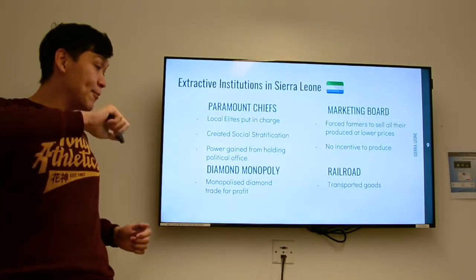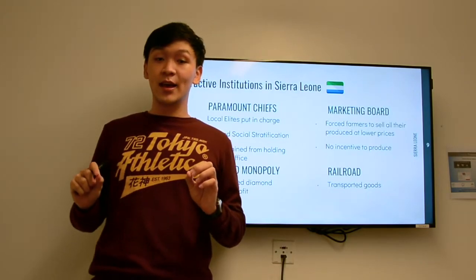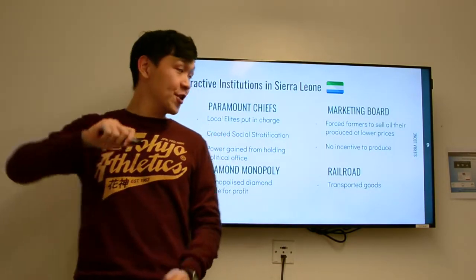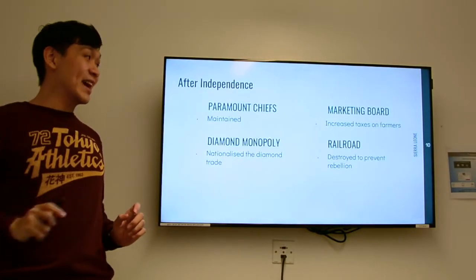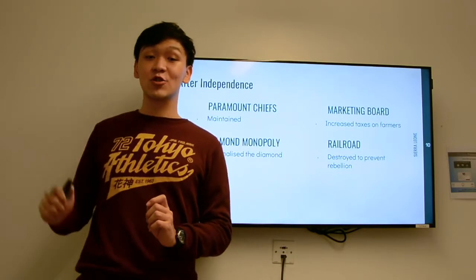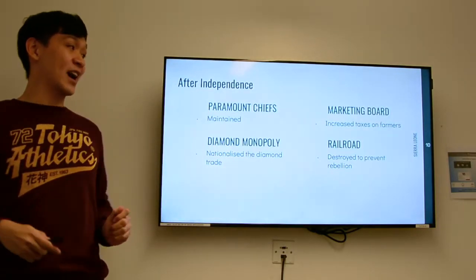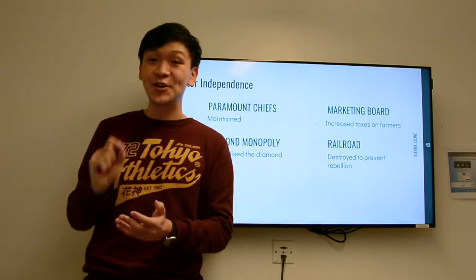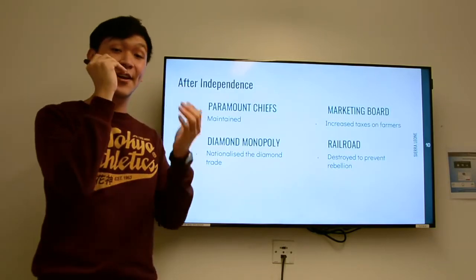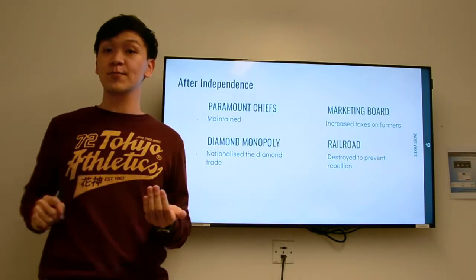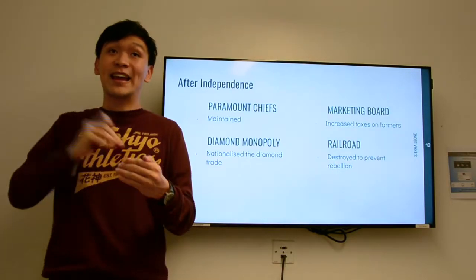In the case of the diamond monopoly, the British ensured they were the only ones able to mine diamonds in Sierra Leone and actually built a road to transfer all these goods. However, after independence, many of these institutions were maintained. The paramount chiefs continued to lead the country. The marketing board was made worse by increasing taxes on farmers. The diamond monopoly was nationalized so the Sierra Leone government became the only one who could mine diamonds. And the road was actually destroyed to prevent rebellion, which set the country back even further.